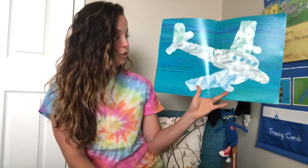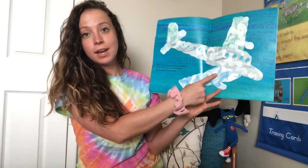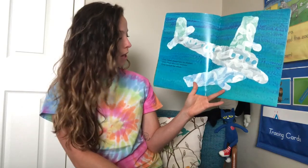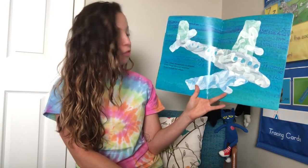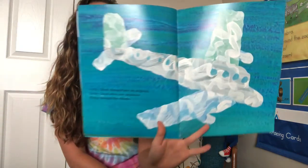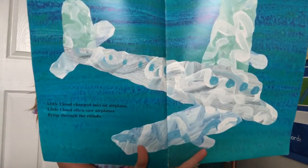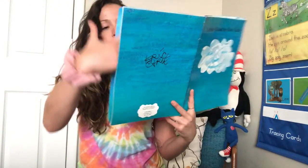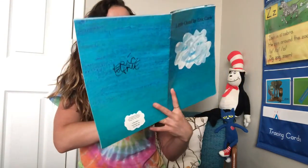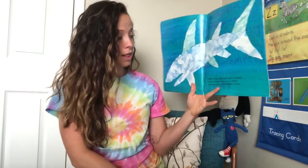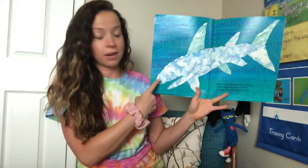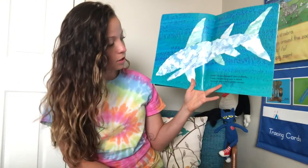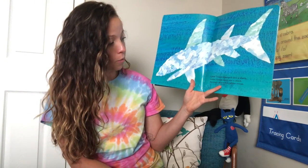Little cloud changed into an airplane. Little cloud often saw airplanes flying through the clouds. Little cloud changed into a shark. Little cloud once saw a shark through the waves of the ocean.